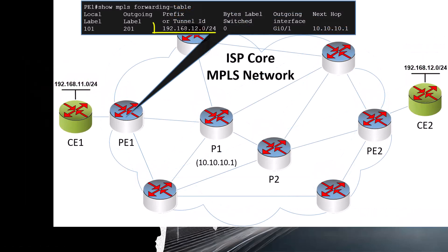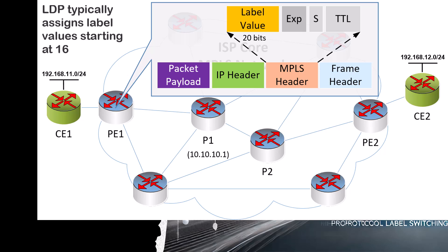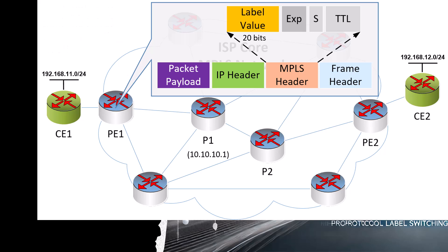PE1 looks at the destination IP address and does a lookup in its LFIB. It sees that the local label is 101 and the outgoing label of the next hop node, which is P1, is 201. The label is a 20-bit field within the MPLS header. Label values 0 to 15 are reserved for special purposes and cannot be assigned to specific prefixes. If you're interested in finding out more about those reserved labels, take a look at a link to the related RFC in the description below. By default, in most vendor implementations, LDP labels for MPLS are assigned starting with a value of 16. This is certainly the case for Cisco devices, while other vendors may choose a different implementation. Since labels are locally significant, it doesn't really matter what actual values are used.